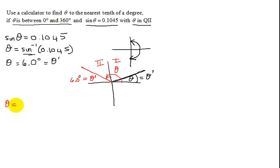Theta equals the angle in quadrant 2 that I want is 180 minus 6.0 degrees. So, the angle in quadrant 2 that I'm looking for is 174.0 degrees.